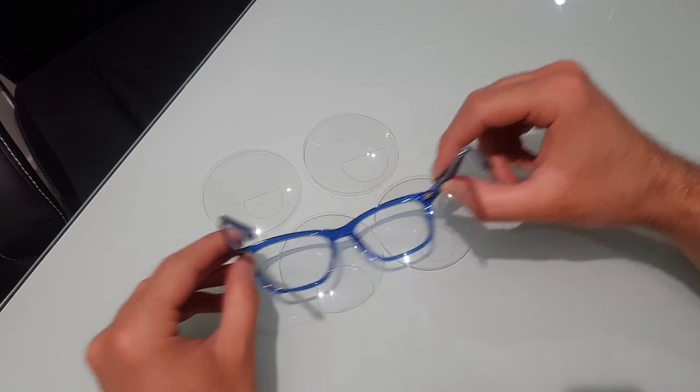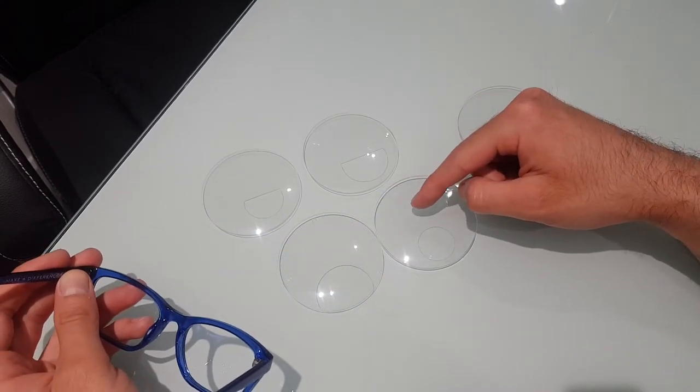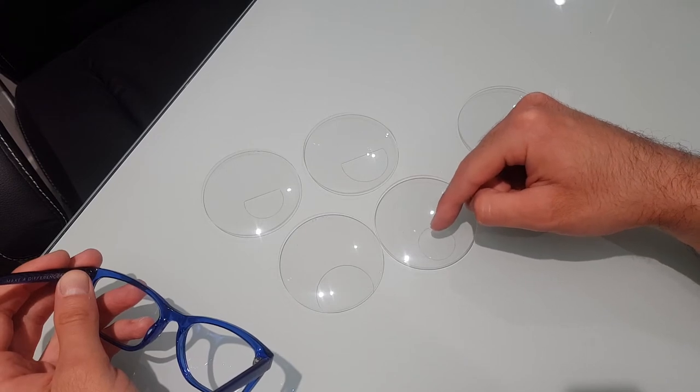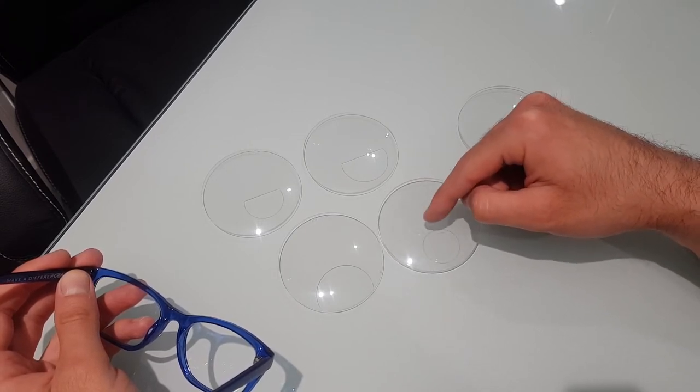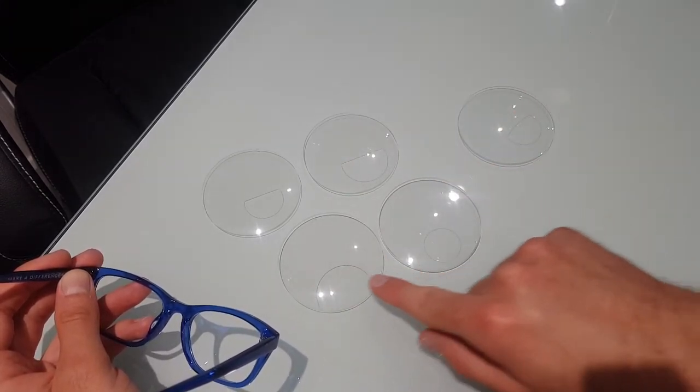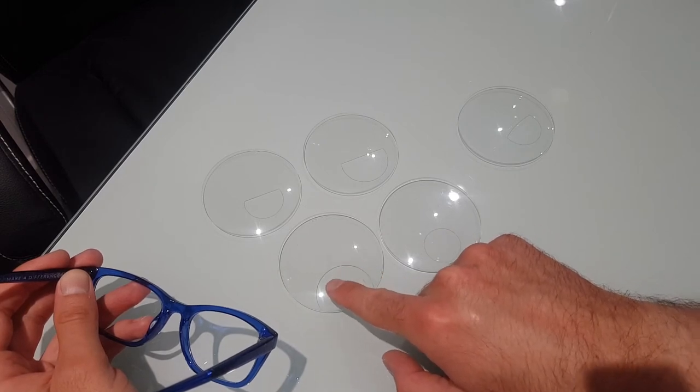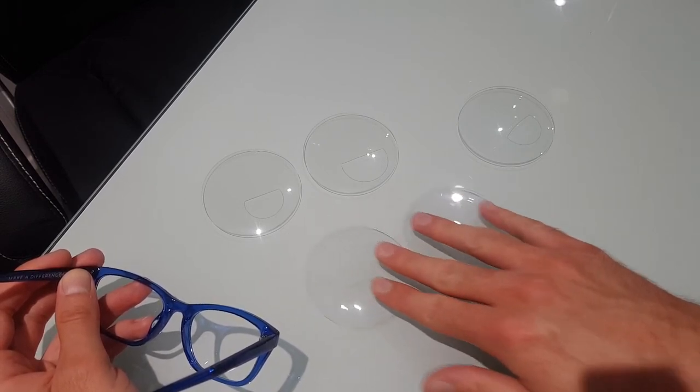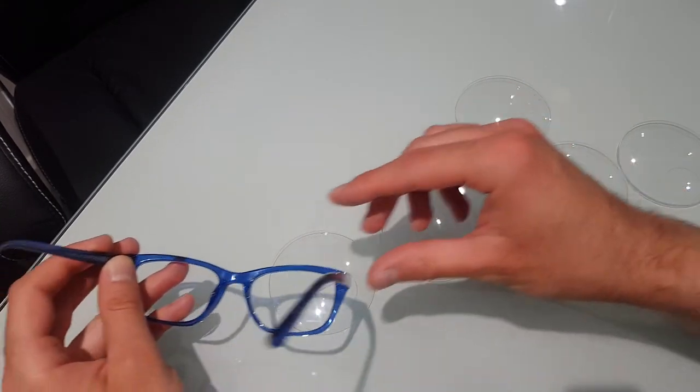One of the things you'll find with a round seg is that when your eyes drop down from looking at the distance to the reading, your eyes aren't met with instantly a wide field of vision. As your eyes come down, the vision width will widen because you're starting at the top edge of the circle. And as your vision comes down, the vision widens here. So that's obviously different to something like a D-seg.